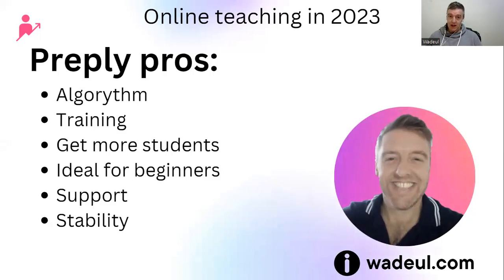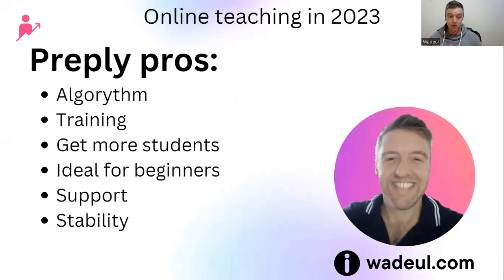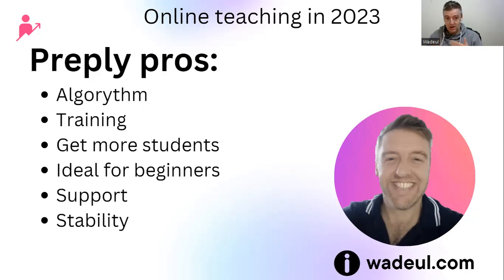First, let's start with the pros. The thing I really, really do like with Preply is the algorithm — it's brilliant. I really do love it because they find you students if you follow the guidelines. That's simple: they tell you what to do, if you do it, they will give you students. Unfortunately, what they ask is to lower your rate, increase your availability, and master the trial lesson. Those three things are the pillars if you want to be at the top of the algorithm and get new students consistently, despite the high competition.